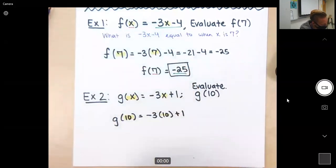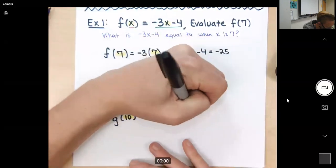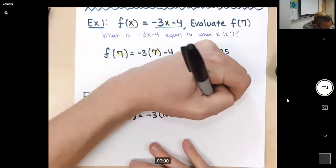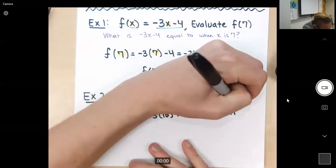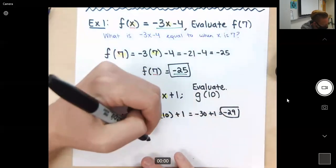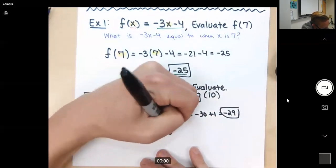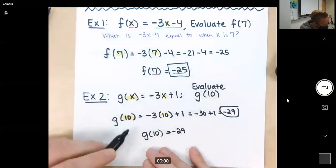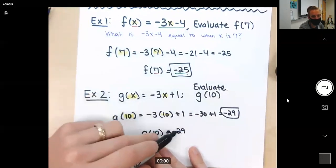Now figure out what number it's equal to. Negative 3 times 10, that's negative 30 plus 1, negative 29. We are done. So g(10) is equal to negative 29. When I input 10 into this function, I get out negative 29.